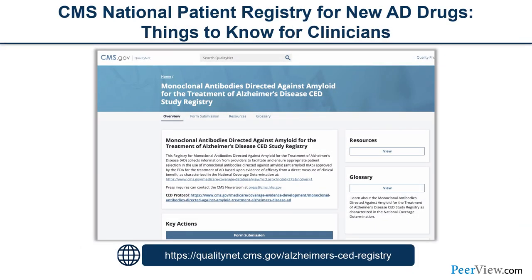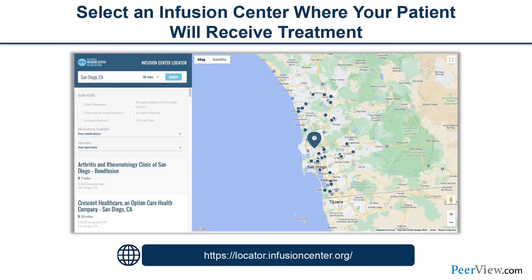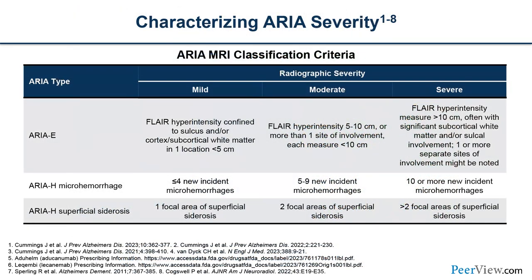Patients must be enrolled in the CMS registry for Medicare reimbursement of the medication. Other approved registries are also available; the CMS registry is probably the simplest. For finding infusion centers, the website locator.infusioncenter.org identifies centers by location. Verify that the infusion center is equipped and ready to administer anti-amyloid monoclonal infusions.